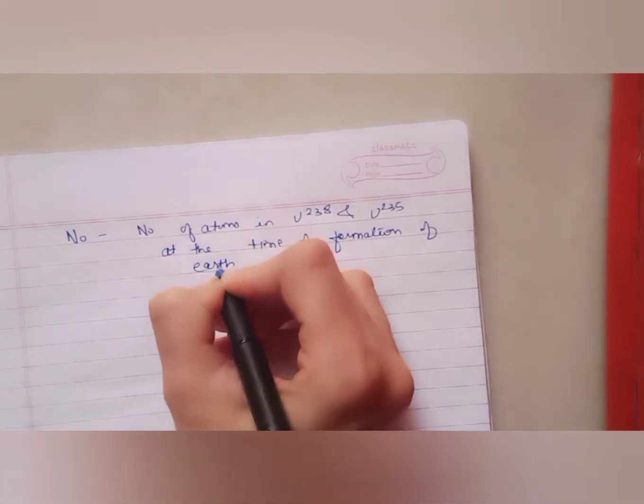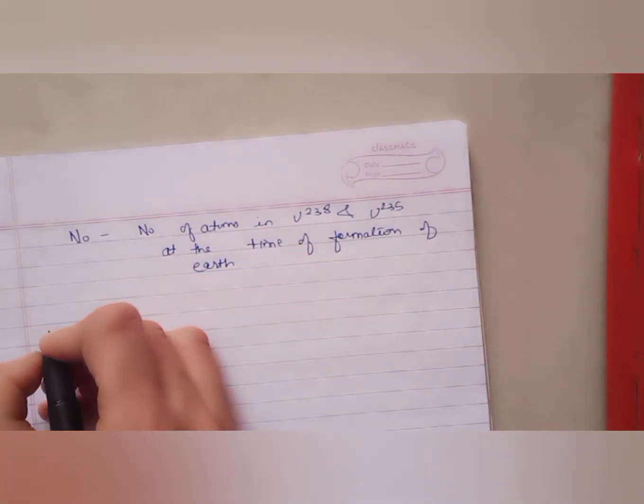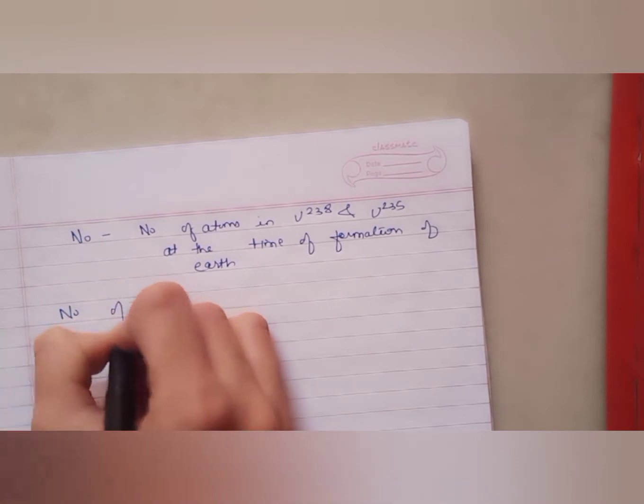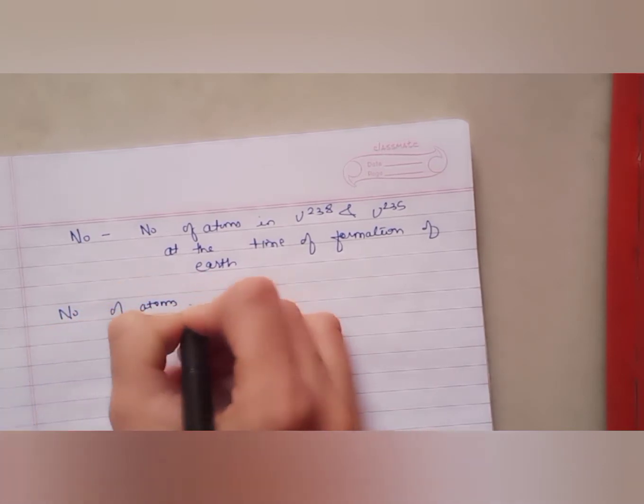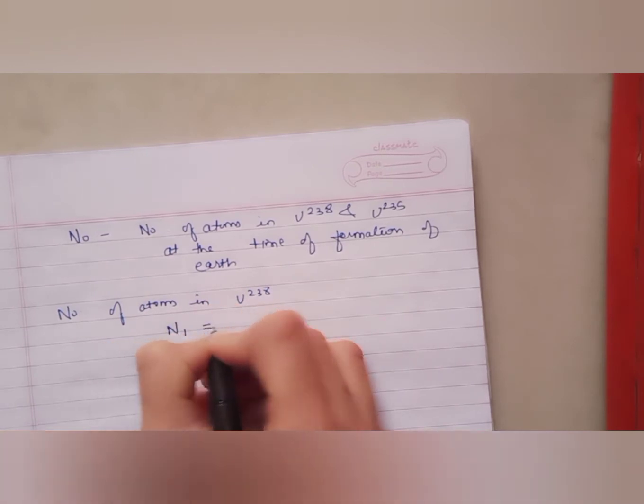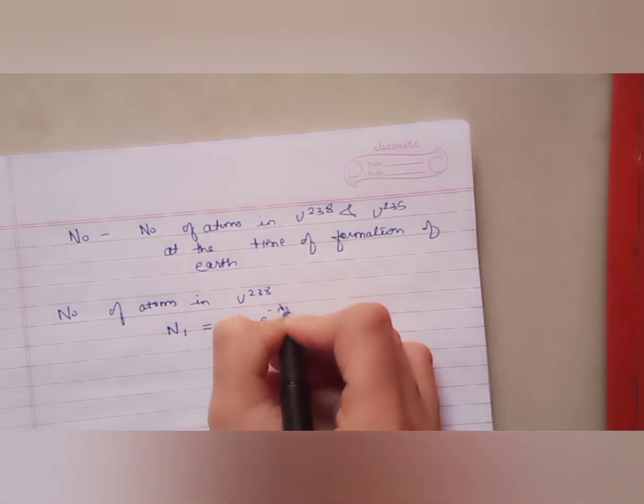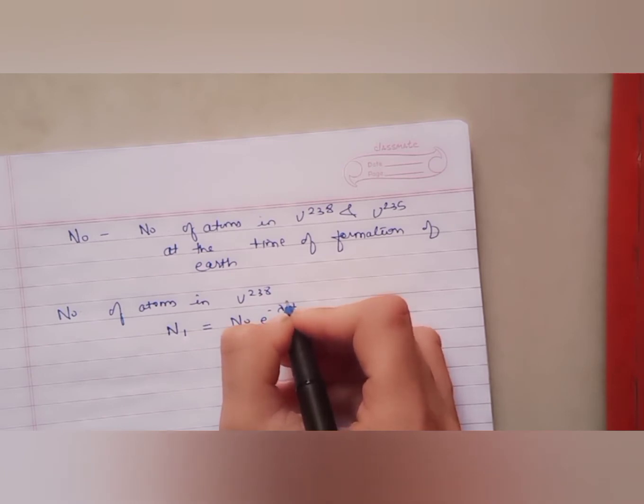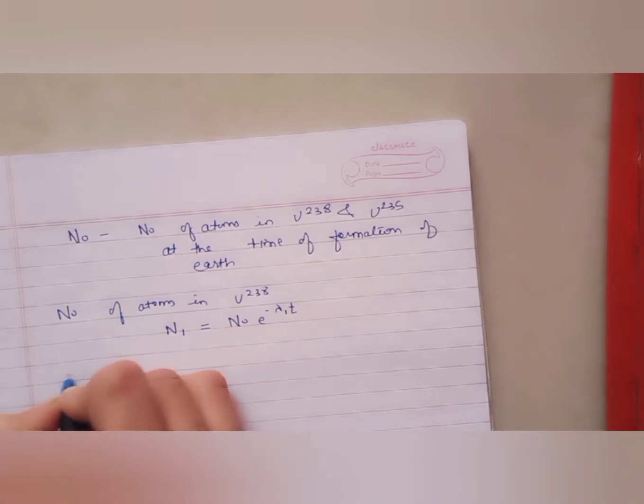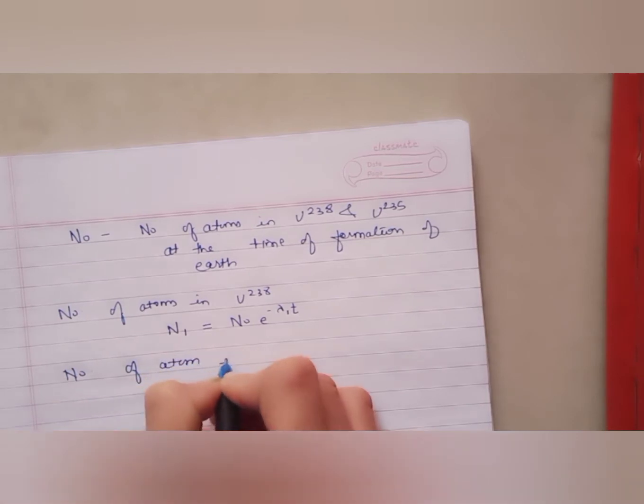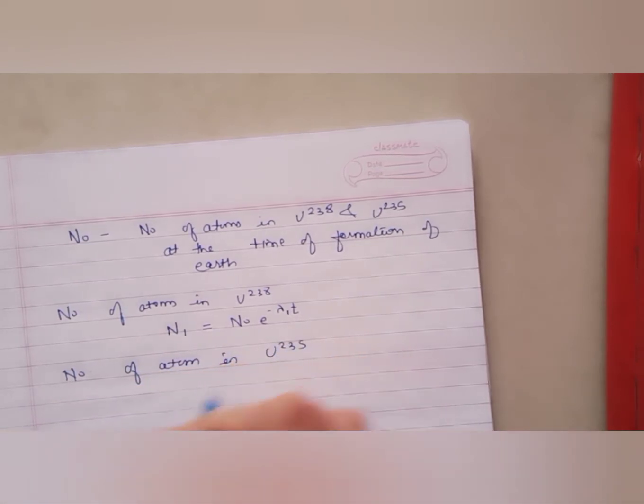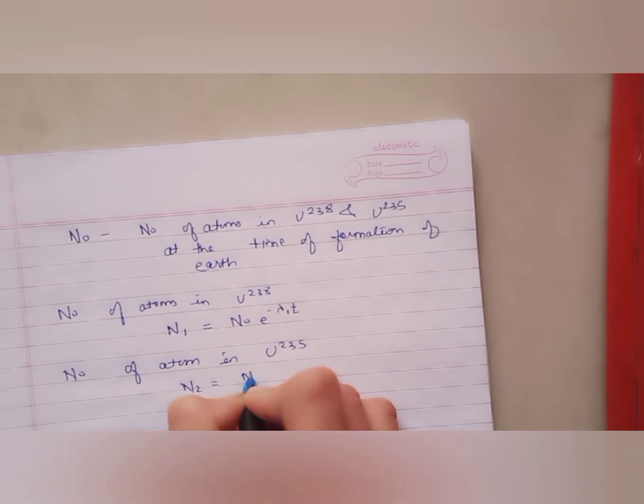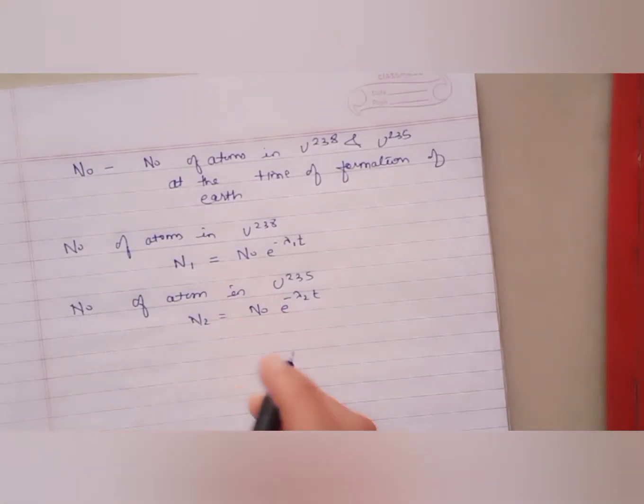Now, what we have to find out? Number of atoms in Uranium-238, suppose it is N₁. N₁ equals N₀e^(-λ₁t). And number of atoms in Uranium-235, it is N₂ equals N₀e^(-λ₂t). So we will divide N₁ by N₂.